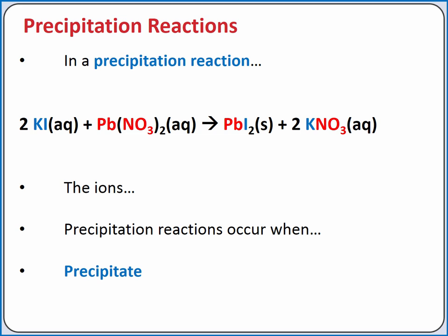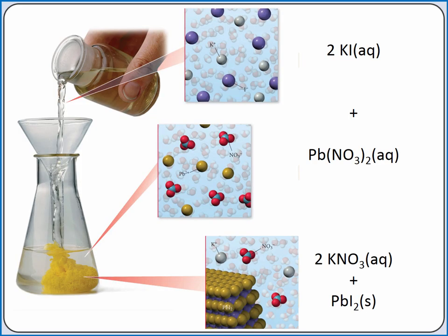For example, when potassium iodide solution is added to lead 2 nitrate solution, potassium switches partners and pairs with nitrate, while the lead 2+ pairs with iodide. Since lead 2 iodide is insoluble, the precipitation reaction occurs. Remember that soluble ionic compounds are strong electrolytes, so the potassium iodide and lead 2 nitrate initially have both broken apart into ions in solution. When the two solutions are mixed, the lead 2+ ions combine with the iodide ions to produce a yellow solid. The potassium and nitrate ions, however, remain in solution.